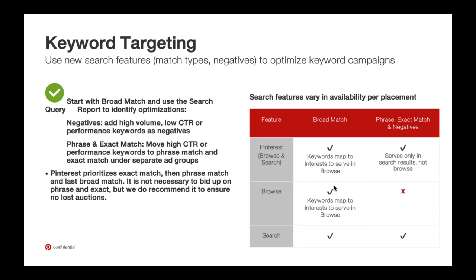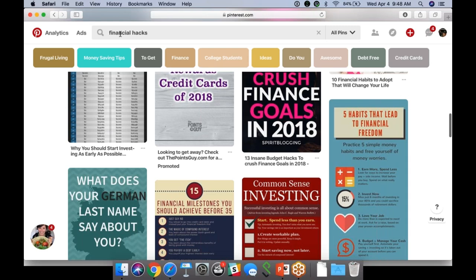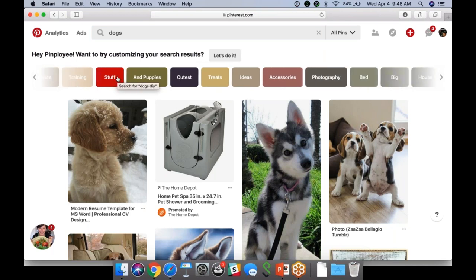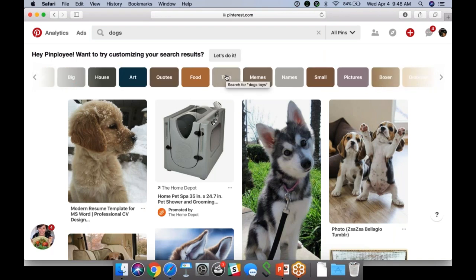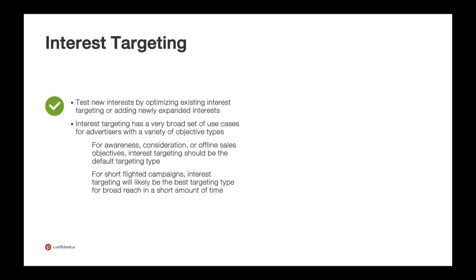Keyword targeting lives in search. There's an infinite grouping of keywords you can target within any specific category. We have a tool in our ads manager called the keyword generator that will help you pull up keywords. A really easy way to see trending keywords is to look at the top of any search result page — 'dog bed, dogs, big dog house, dog art' — all trending keywords to fuel your targeting. Interest targeting comes in our home feed or browse. We have a finite set of interests listed in ads manager — food, desserts, women's fashion, beauty — 522 interest categories total across our platform, and always growing.